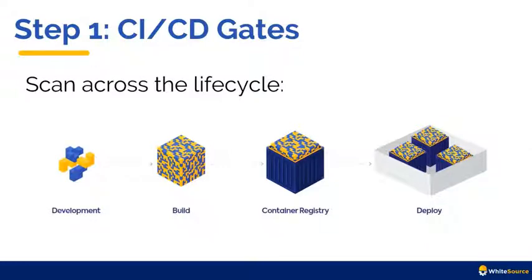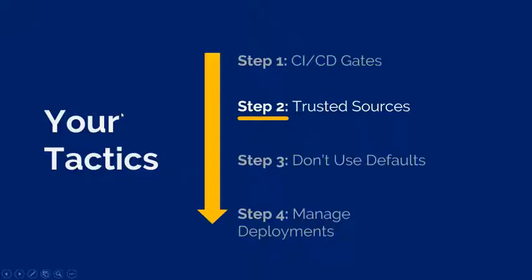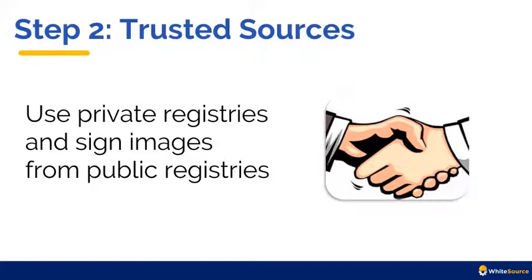The second step is trusted sources. Use private image registries. Sign your images. If you do get images from Docker Hub, scan them for security vulnerabilities first, and only then put them in your private registry. If you know that everything in your private registry is protected, it makes the whole process a lot more secure.